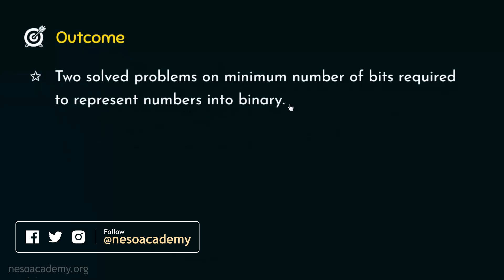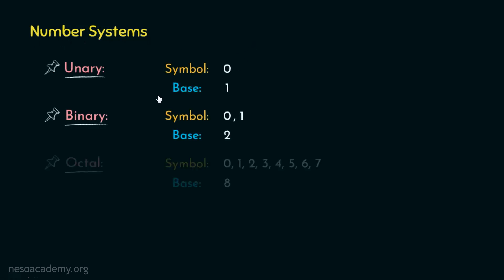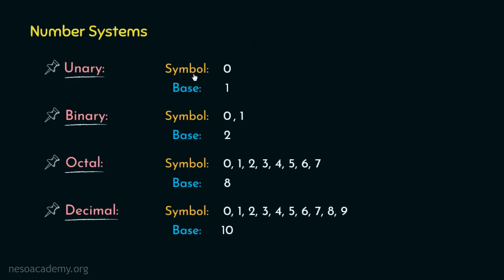But before diving straight to the problem, let me illustrate something very interesting. Let's quickly revisit the different number systems that we have studied so far. In case of unary, we use the symbol 0 to represent numbers, and since we use only one symbol for representation, the base or the radix of the unary number system is 1.